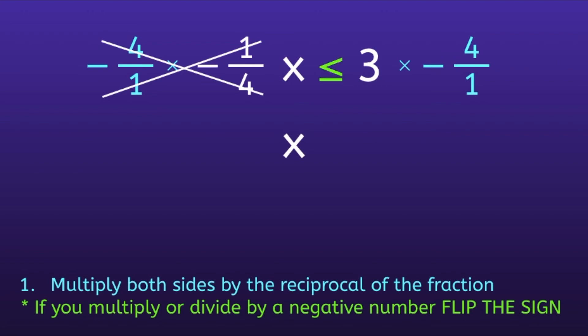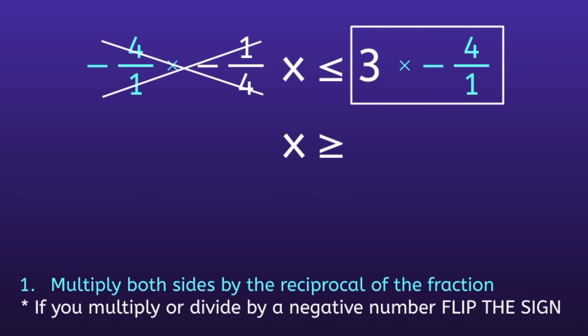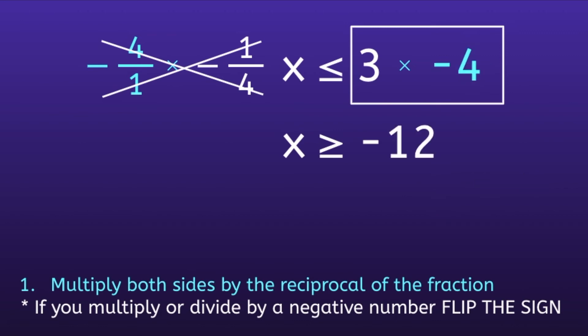So since the original inequality sign is pointed to the left, we have to flip it, so now it is pointed to the right. If we focus on the right side now, we have 3 times negative 4 over 1. It's important to notice that negative 4 over 1 is the same as just negative 4. So 3 times negative 4 is equal to negative 12. If you notice you're struggling with multiplying by negative numbers, I will include a link in the description to a song I made to help you with that skill. So the final inequality will be x is greater than or equal to negative 12.